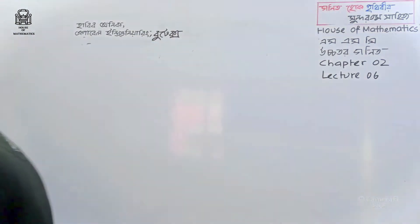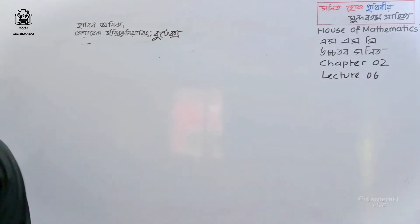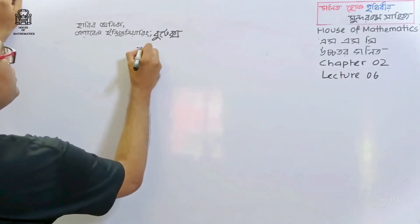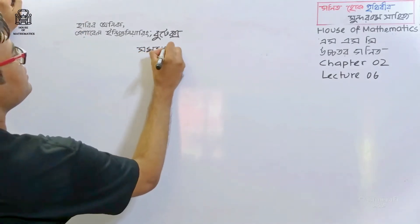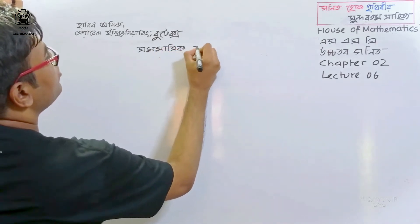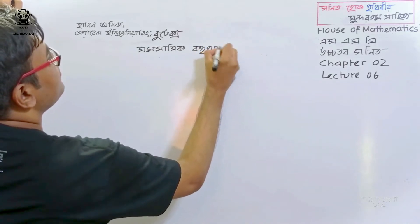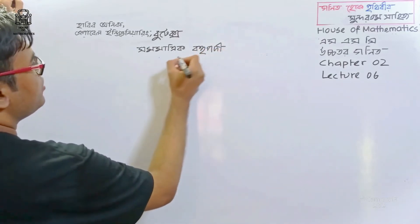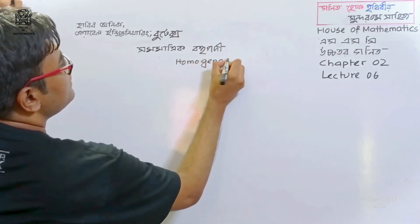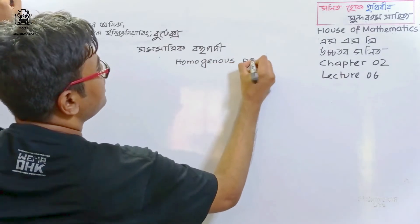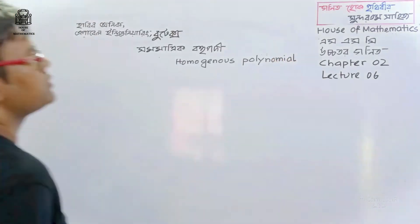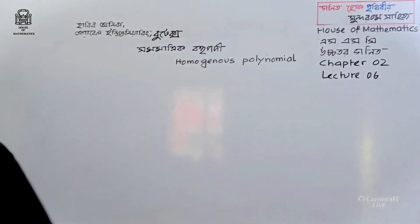Let's start with the title. The topic is symmetric and homogeneous polynomials — Shama metric boho pody. Homogeneous Polynomial. We will discuss about it.